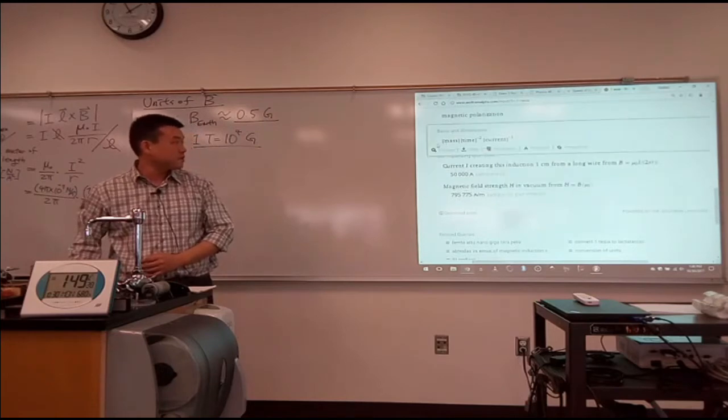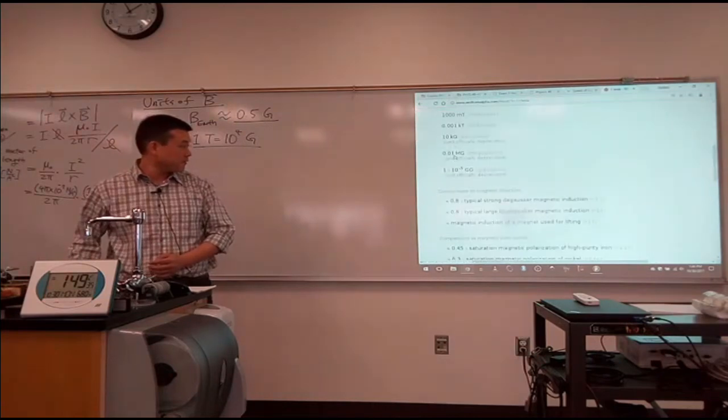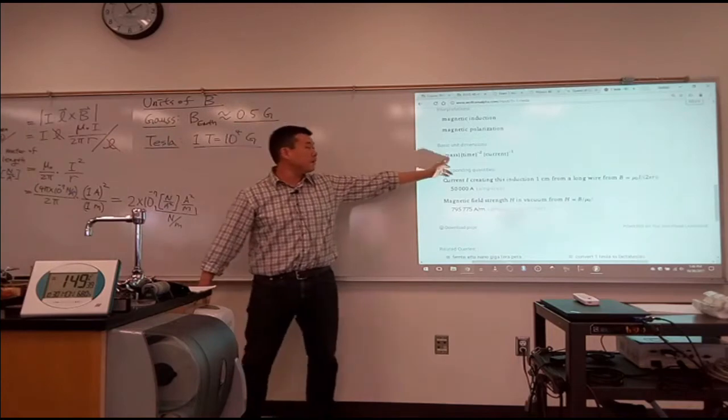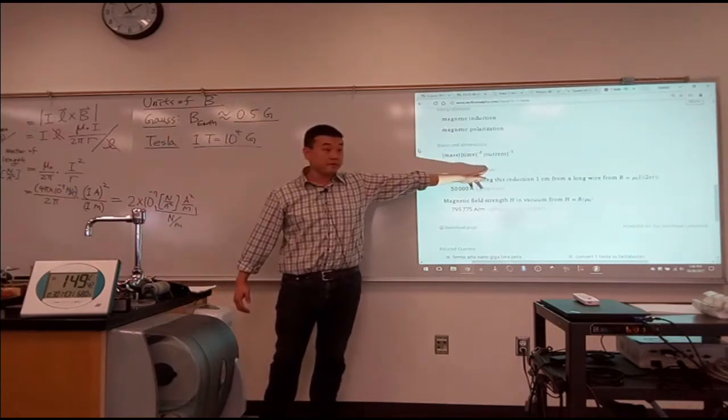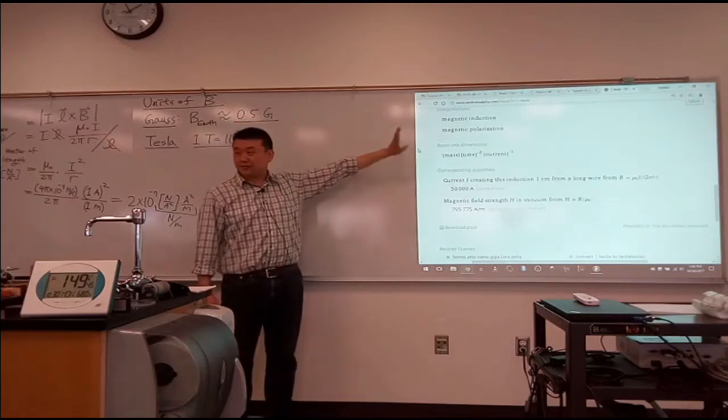Basic unit dimensions. It says mass per time squared per current. Oops, what did I do? Mass per time squared per current. So kilogram per second squared per ampere. So if you have access to Wolfram Alpha, that's all great. You would just look it up. How would you figure this out?